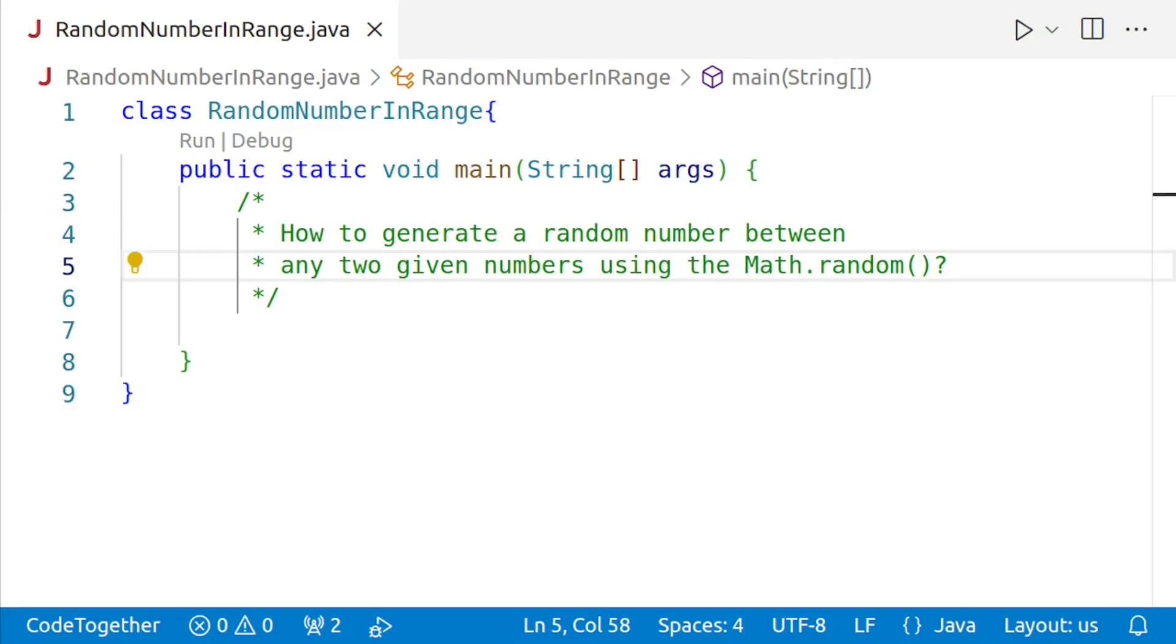Before we start, let's take a moment to understand what a random number is. A random number is a number that has no pattern or order and is generated by a process or algorithm that cannot be predicted. Now let's get into the details of how to generate a random number in Java.